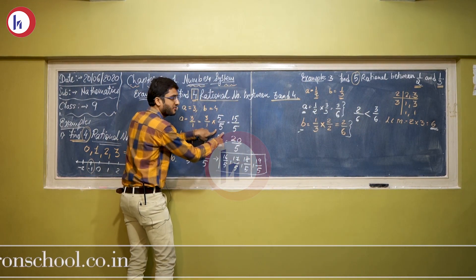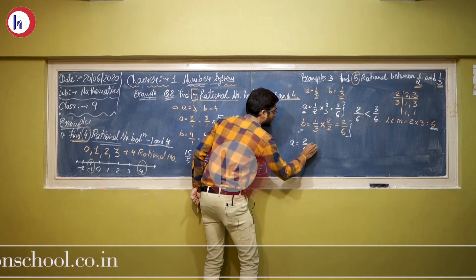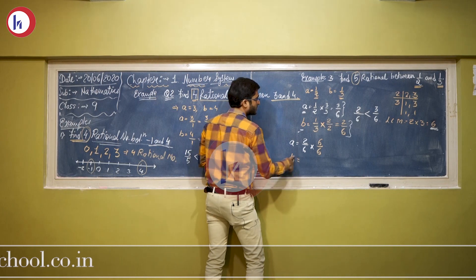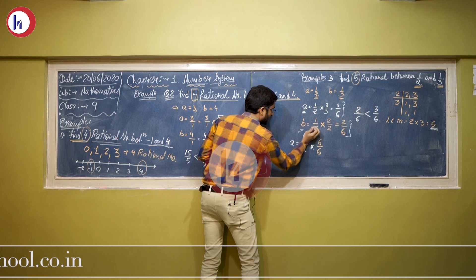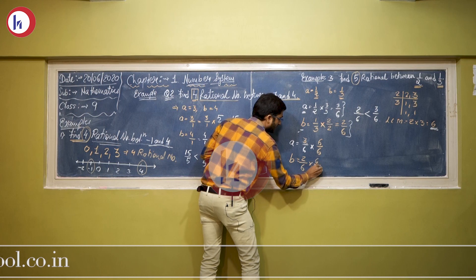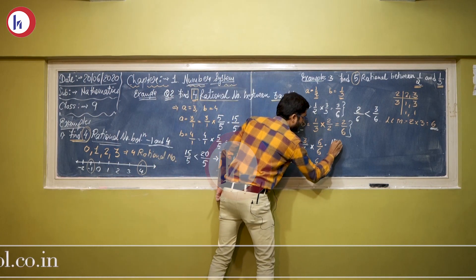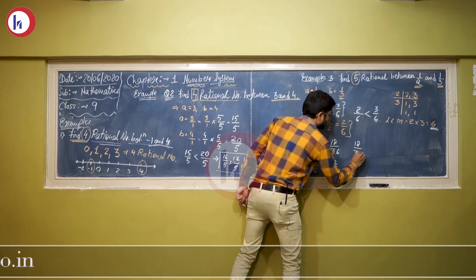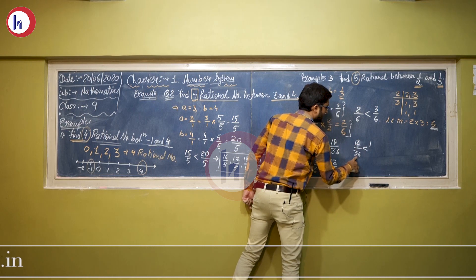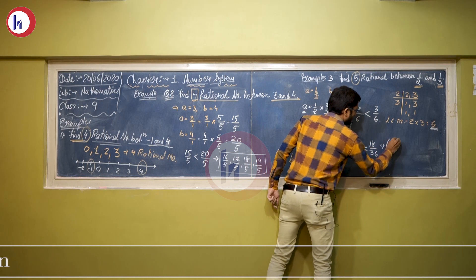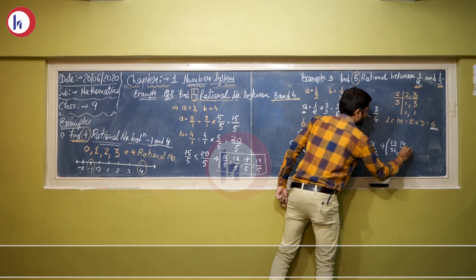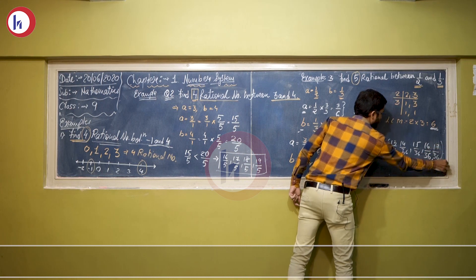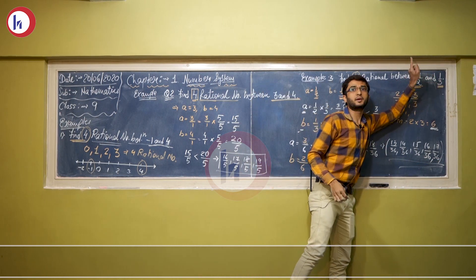Since the numerators 2 and 3 have no numbers between them, we multiply further. A = 2/6 × 6/6 = 12/36 and B = 3/6 × 6/6 = 18/36. Now 12/36 < 18/36, so the five rational numbers between them are 13/36, 14/36, 15/36, 16/36, and 17/36. These are the five required rational numbers between 1/2 and 1/3. Thank you.